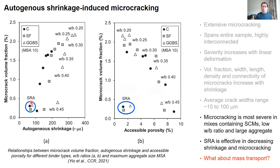The question then is: what is the impact of microcracks on mass transport? Some may think that because these cracks are small, surely they can't have a huge effect. Well, the microcracks are small relative to structural cracks, but they are 100 times larger than the capillary pores, and many more orders of magnitude larger than the gel pores within the hydrates. And because these cracks are highly interconnected, they should accelerate transport — but we have absolutely no idea to what extent that impact may be.